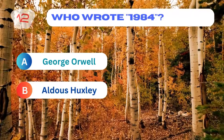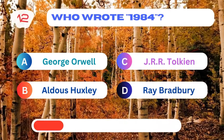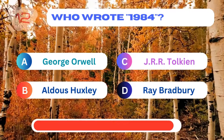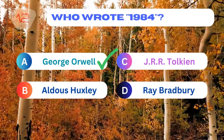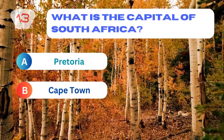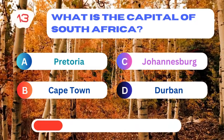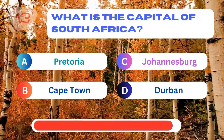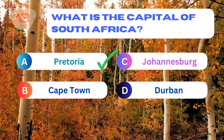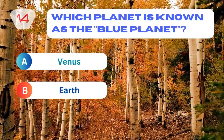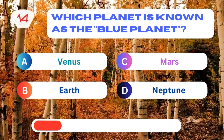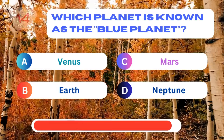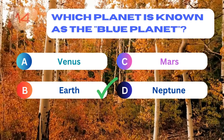Who wrote 1984? George Orwell. What is the capital of South Africa? Pretoria. Which planet is known as the blue planet? Earth.